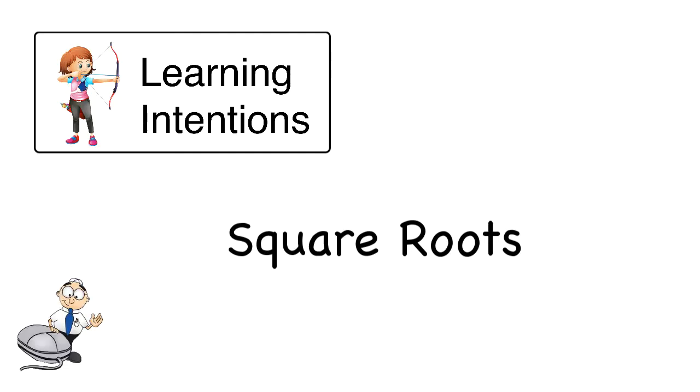Square roots. The square root of a number is a number that you would square to get this number. For example, the square root of 4 is 2 because 2 squared is 4.